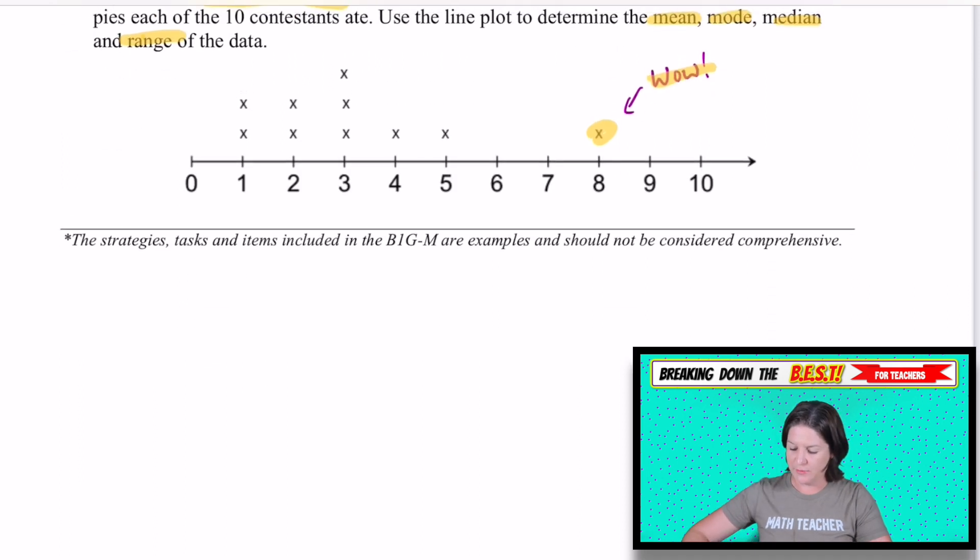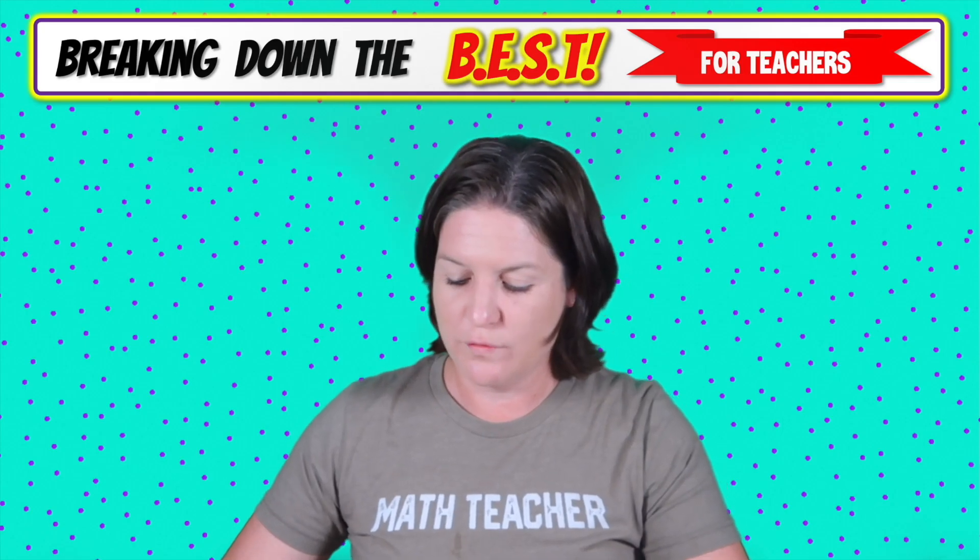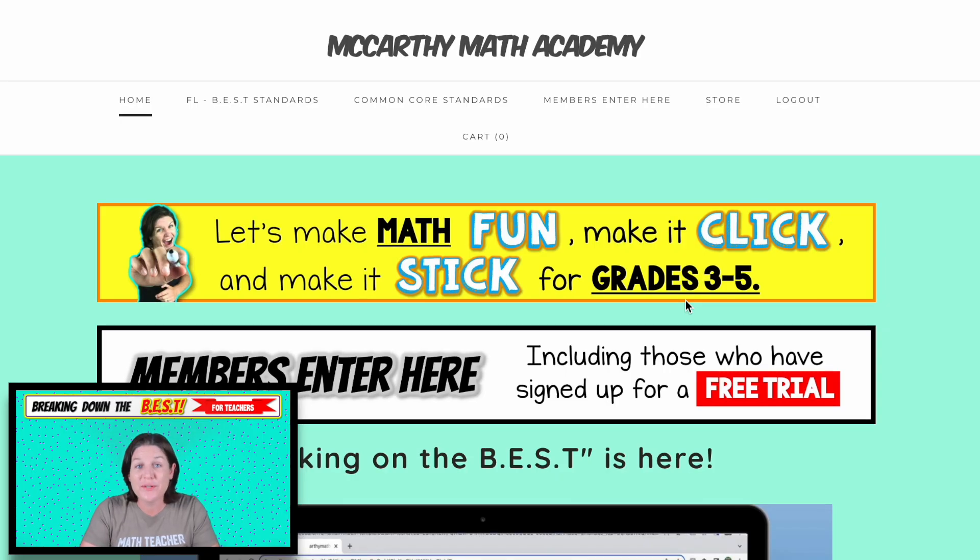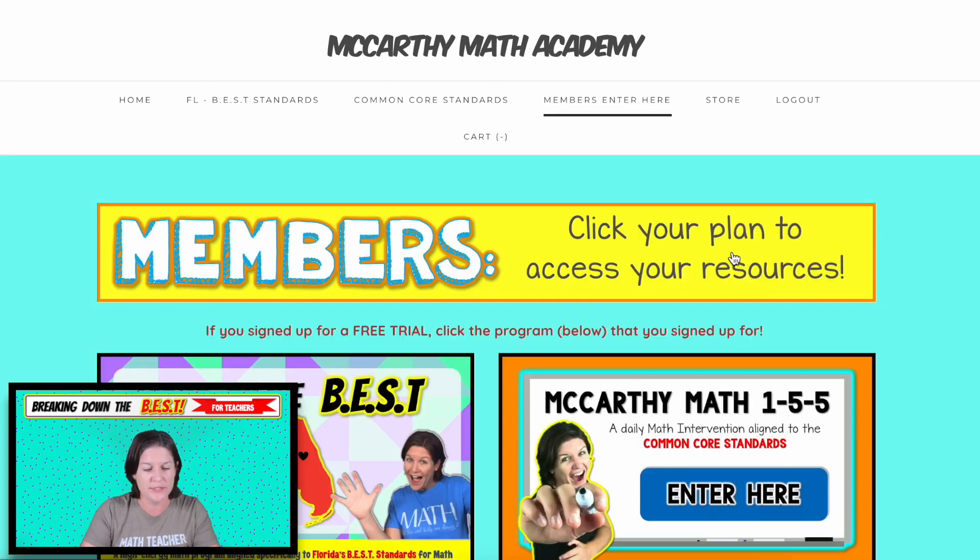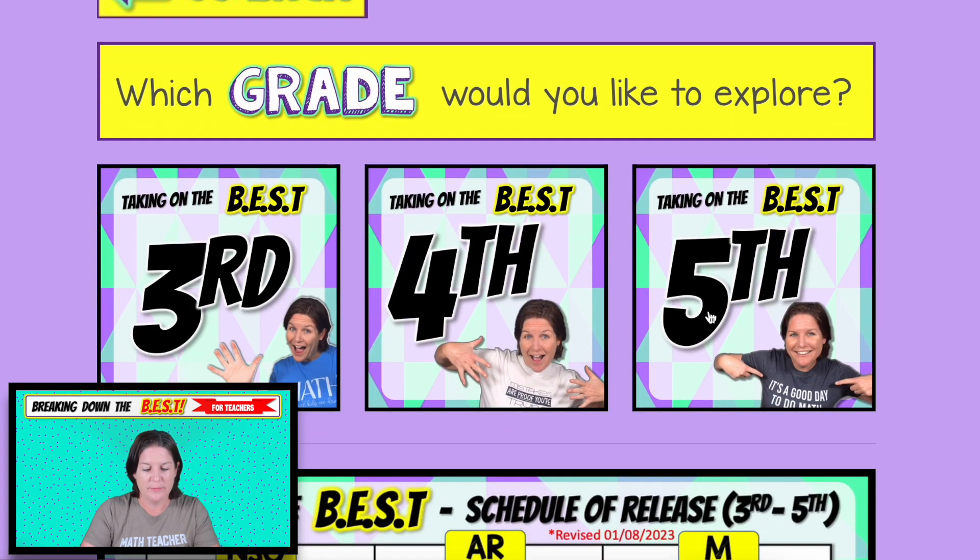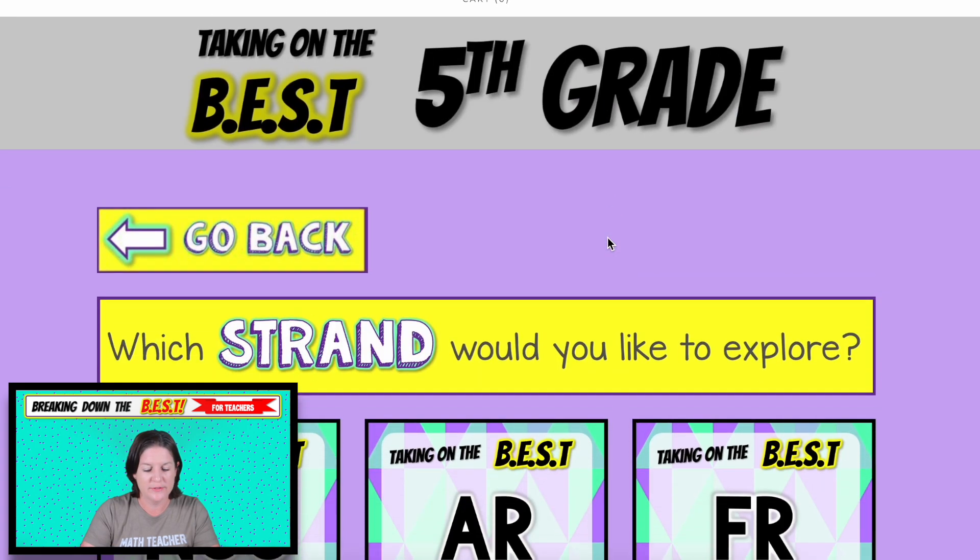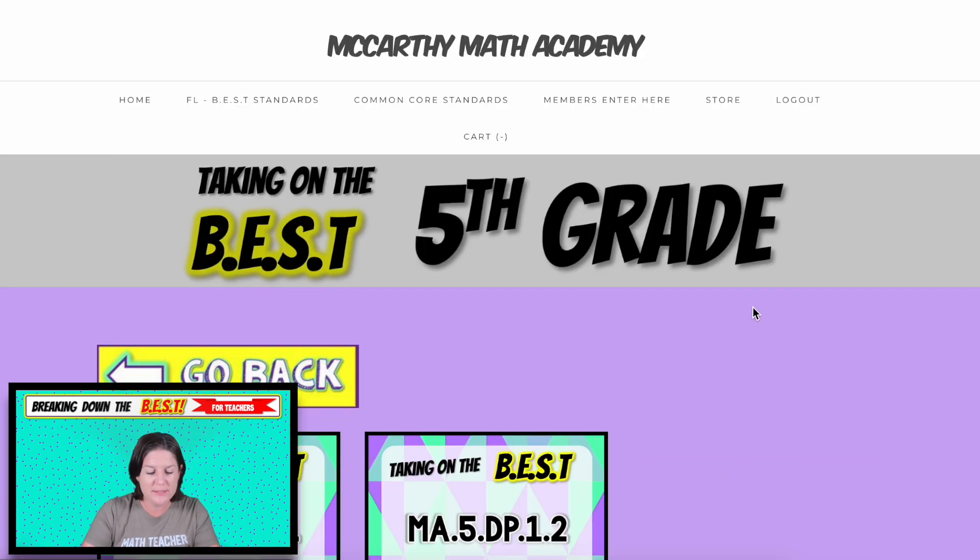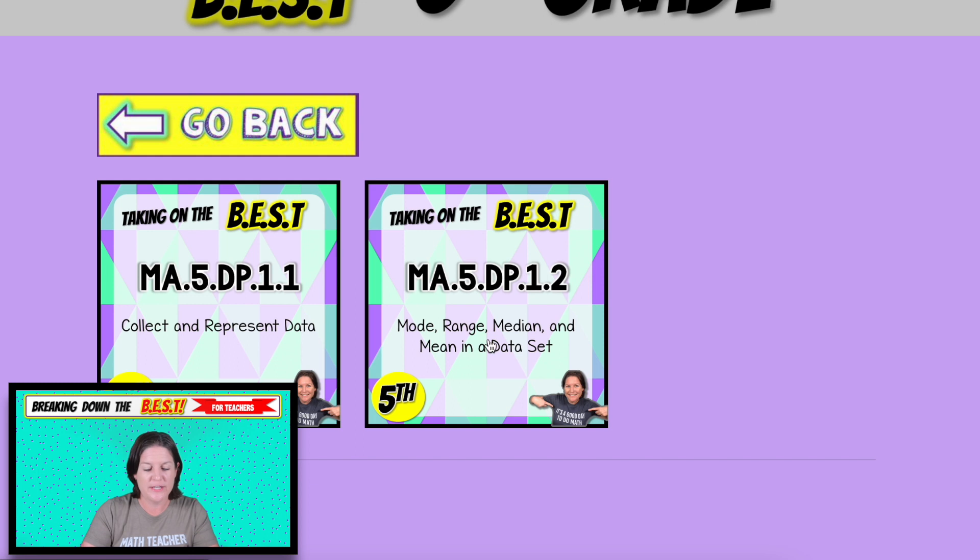So let's go ahead and go over to the website to see what you have access to with your taking on the best membership. All right. So here we are at mccarthymathacademy.com. We're going to click members, enter here, select taking on the best. And then we want fifth grade. So we will scroll down to data analysis and probability, the DP strand. And we want this one right here, ma.5.dp.1.2, the mode, range, median, and mean in a data set.